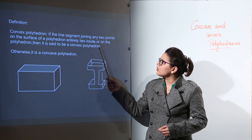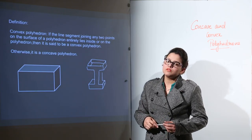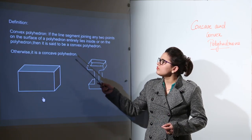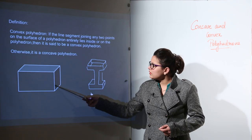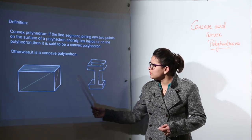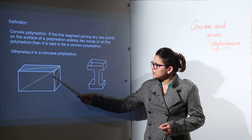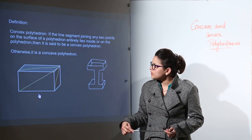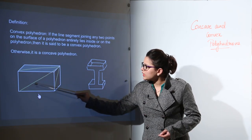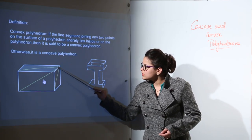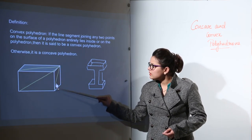Otherwise, if the line segment joining two points on the surface of a polyhedron is not lying inside the polyhedron and neither lying on the polyhedron, that will be the case of a concave polyhedron.